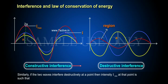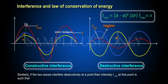Similarly, if the two waves interfere destructively at a point, then intensity I minimum at that point is such that I minimum is directly proportional to (A minus A) squared, or I minimum is directly proportional to 0.